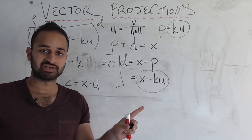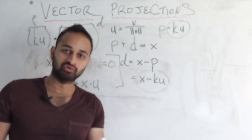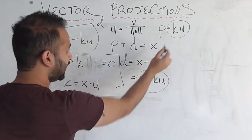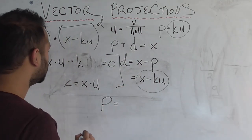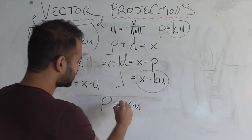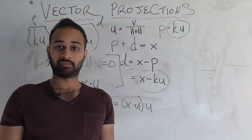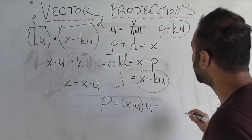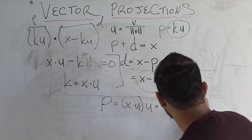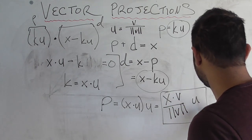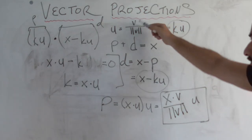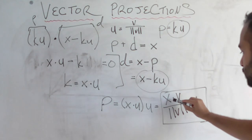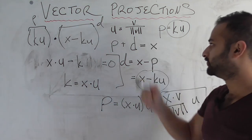And k is exactly what we were looking for — the scalar multiplier of u that defines the projection. Plugging k back in: p = (x · u) · u. Substituting u = v / ||v||, we get p = (x · v / ||v||) · (v / ||v||). So the projection of vector x onto vector v is p = (x · v / ||v||²) · v.